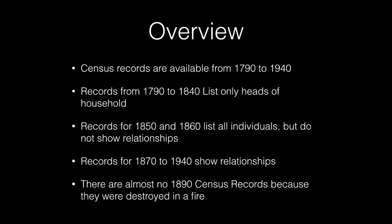The Census records are available from 1790 to 1940. The records from 1790 to 1840 list only heads of household. Records from 1850 and 1860 list all individuals but do not show relationships. Records from 1870 to 1940 show relationships. There are almost no 1890 Census records because they were destroyed in a fire.